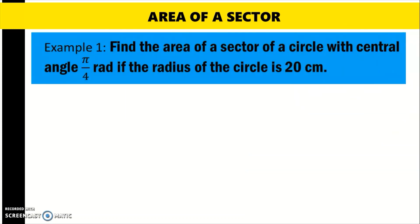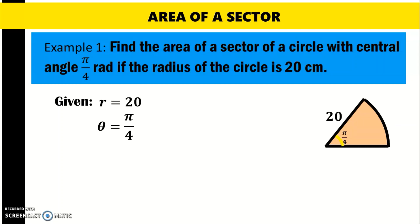Example: Find the area of a sector of a circle with central angle pi over 4 radians if the radius of the circle is 20 centimeters. The given in this problem is r equals 20 and theta is pi over 4. That's the sector with central angle pi over 4 and radius 20.